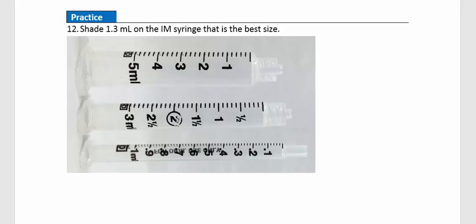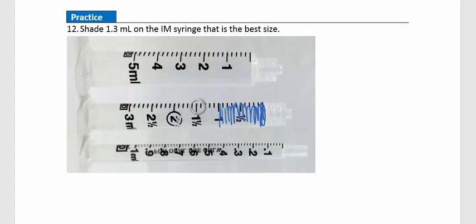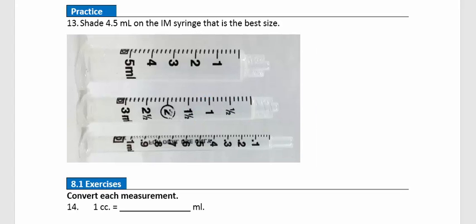Practice question 12: Shade 1.3 mL on the best-sized syringe. A 1 mL syringe won't work, so the 3 mL syringe is the smallest suitable option. Starting at 1, we need to add 0.3 more. The 3 mL syringe has 10 tick marks between whole numbers, so each mark is 0.1 mL. We count 1, 2, 3 tick marks past 1 and shade to 1.3 mL.